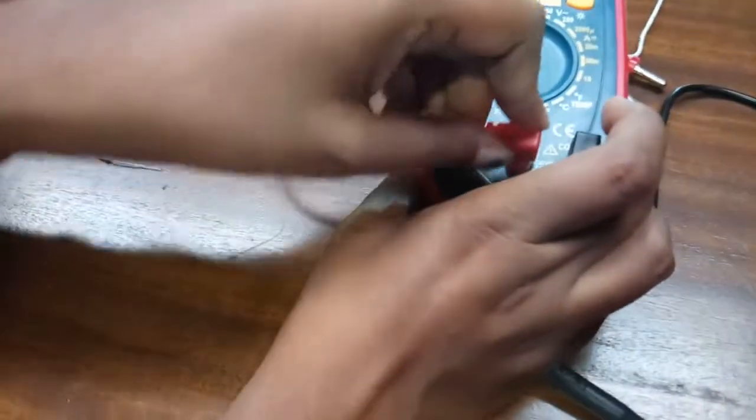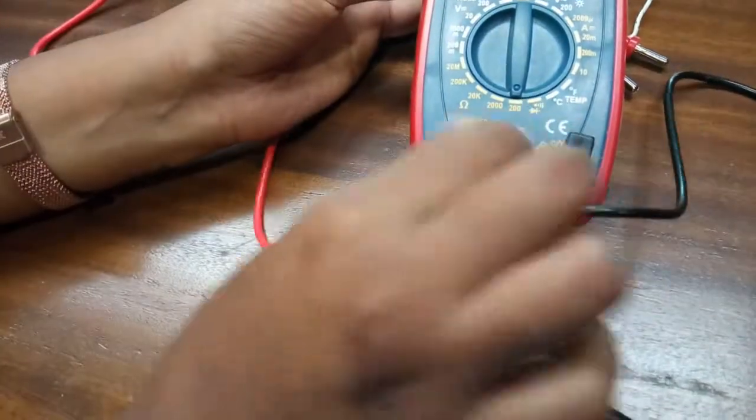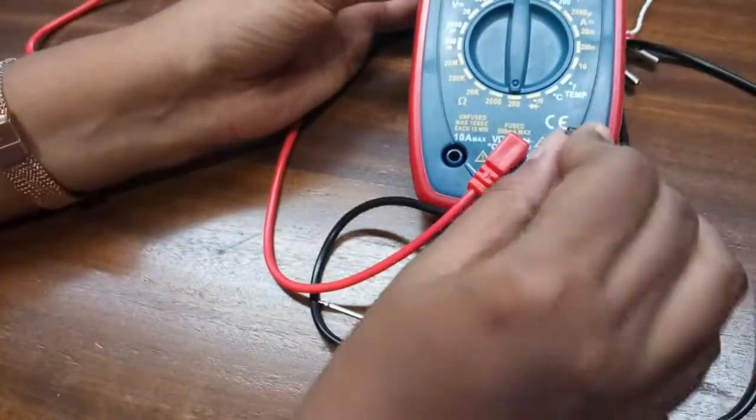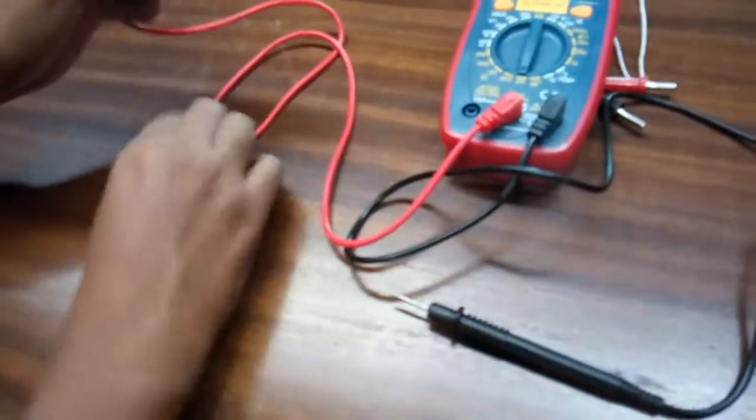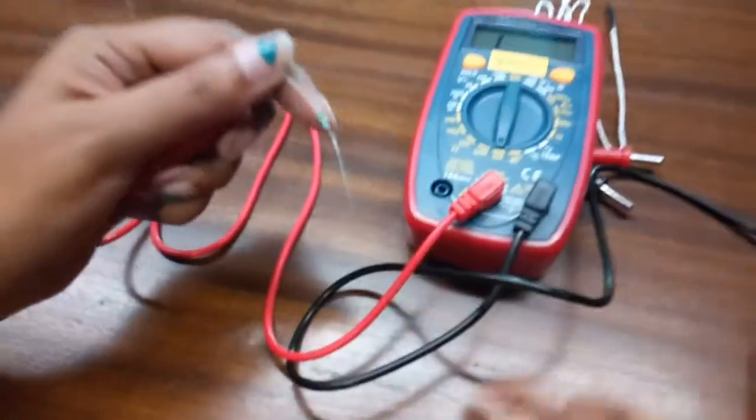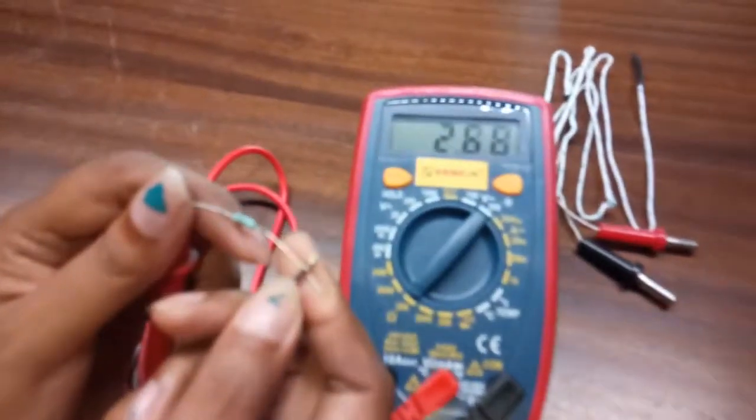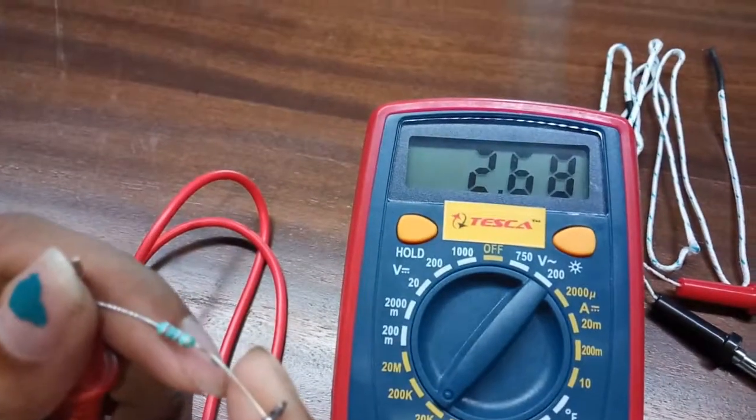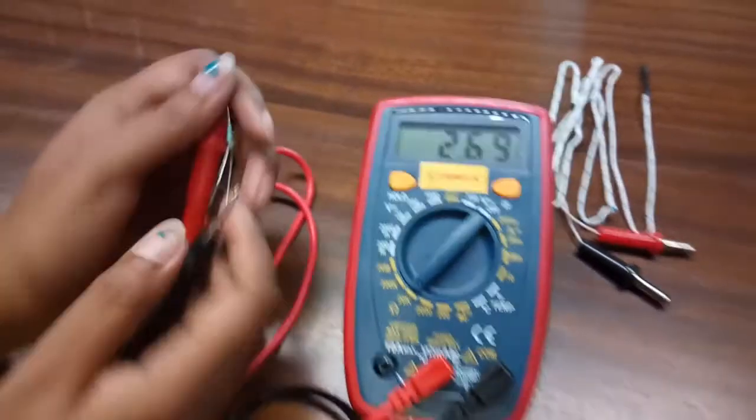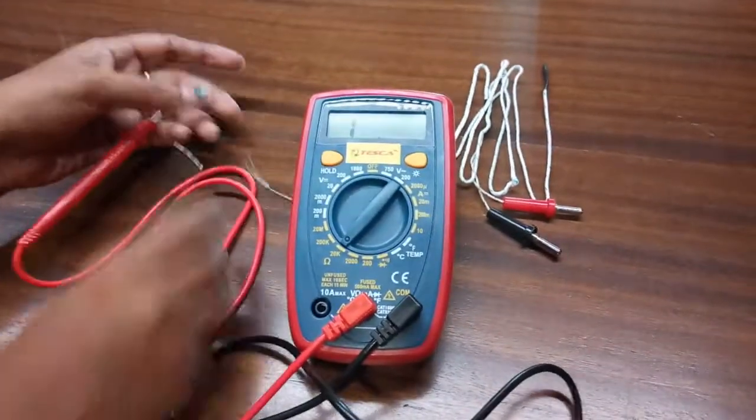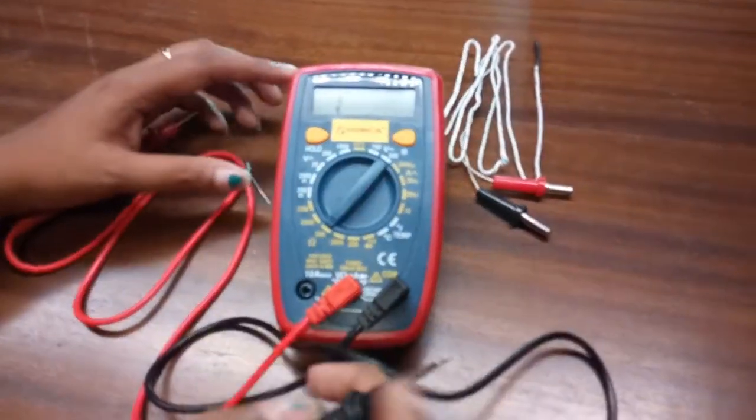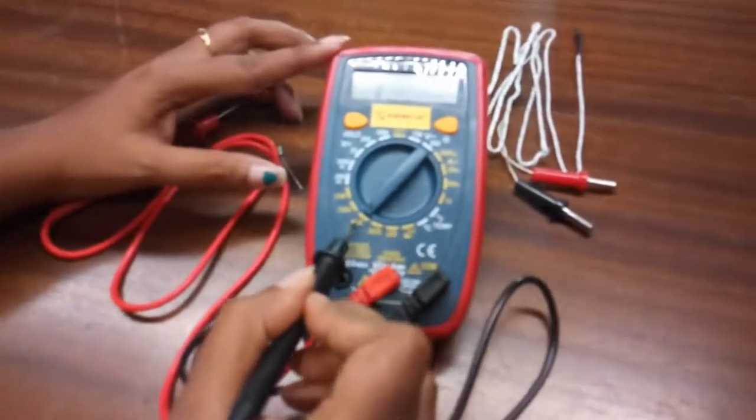Connect this with the red testing probe and for an example, we are going to measure a resistor. So like this, hold the resistor. You can see, this is a 2.7k resistor like this. You can choose the range with the help of this here.